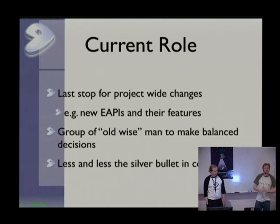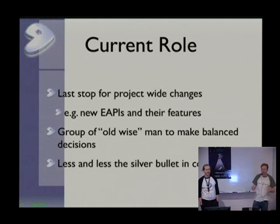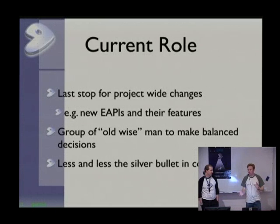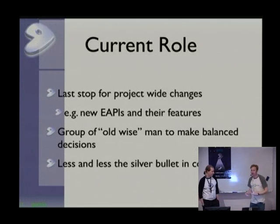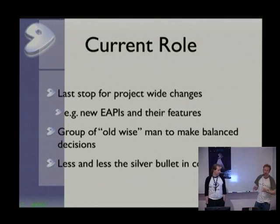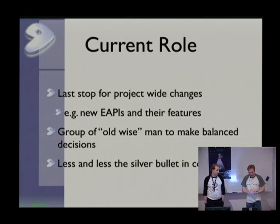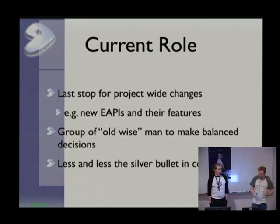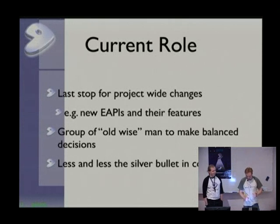Basically, the biggest thing we do is vote on eAPIs. That is, in Gen2 speak, a versioning scheme describing what is available in our ebuild system — essentially our format that describes how a package is built. And that's basically where we come in as a group of old wise men, even though we're not really old, and I'm not sure if we're always that wise.